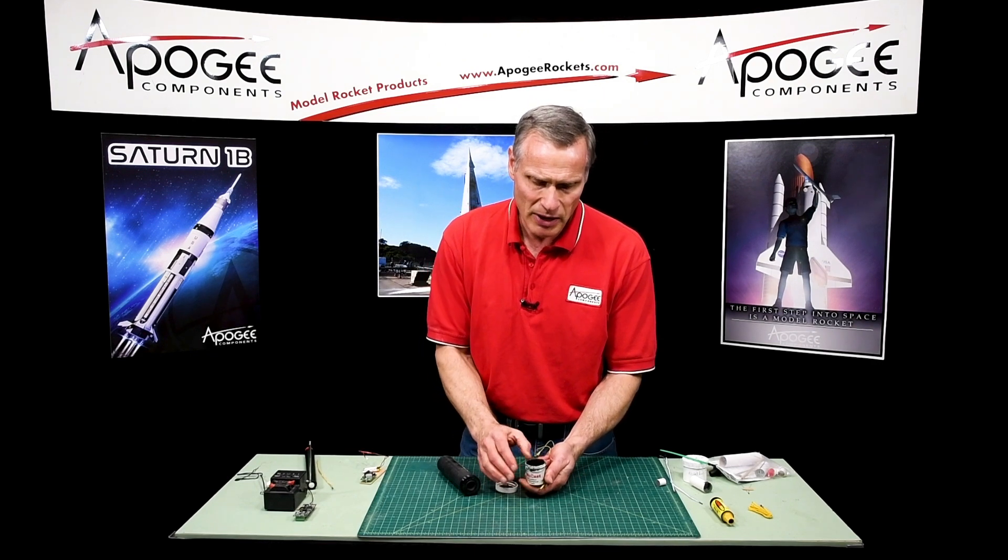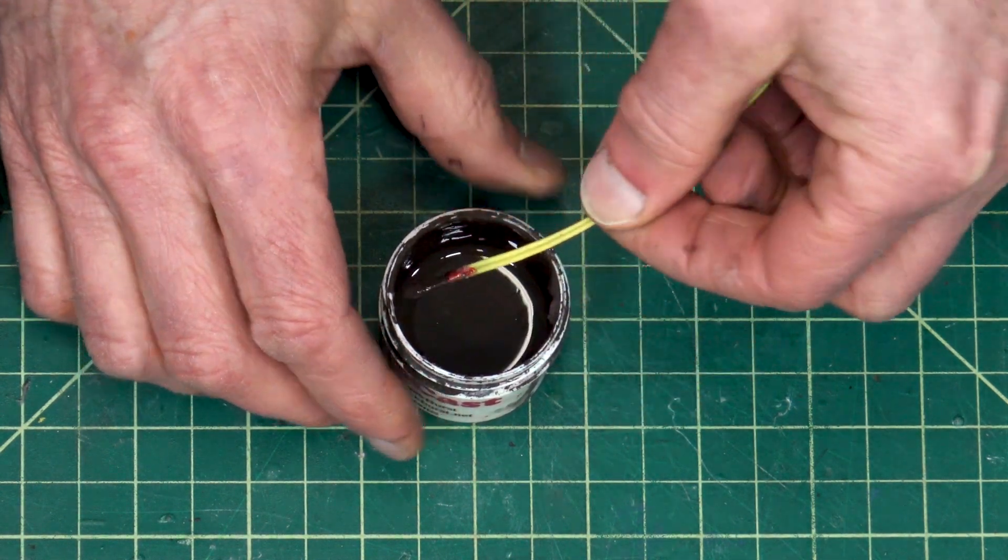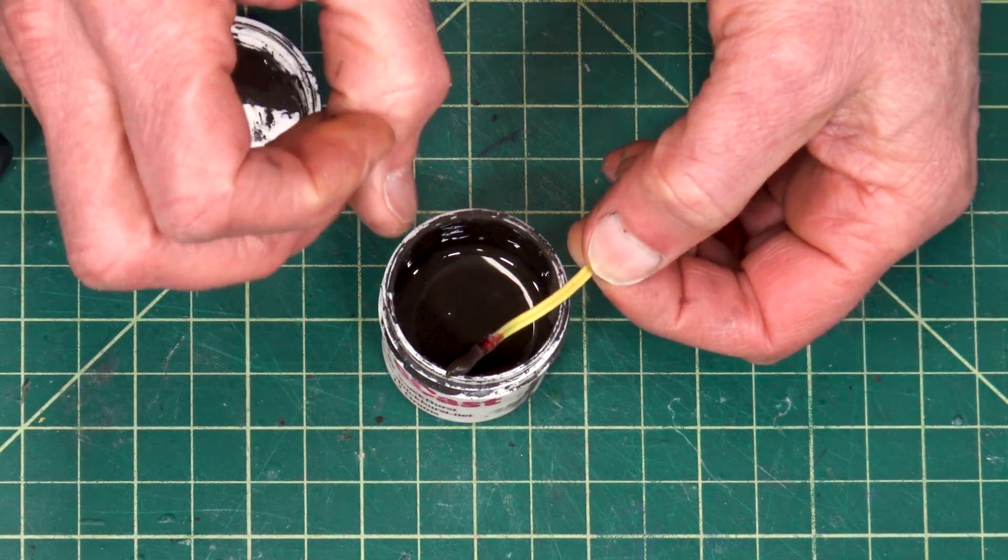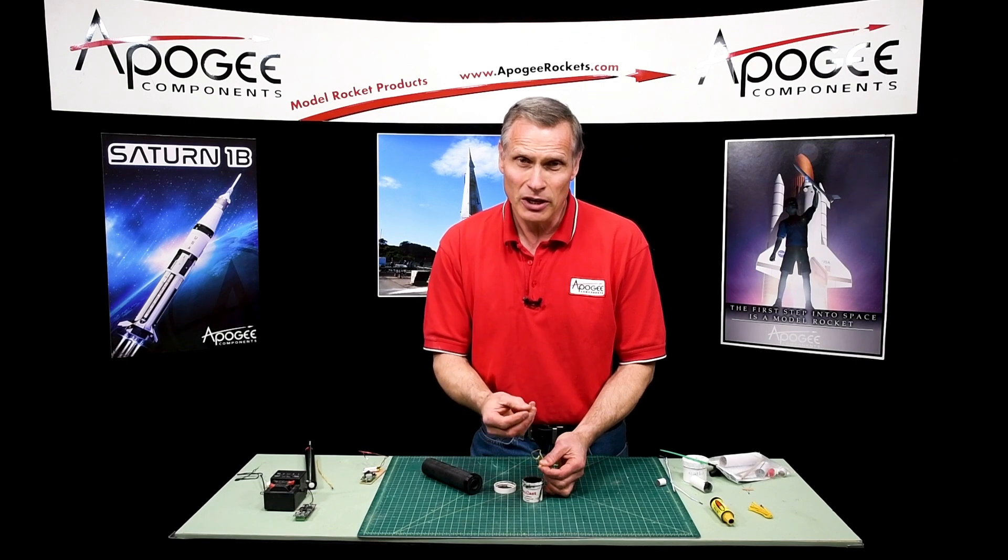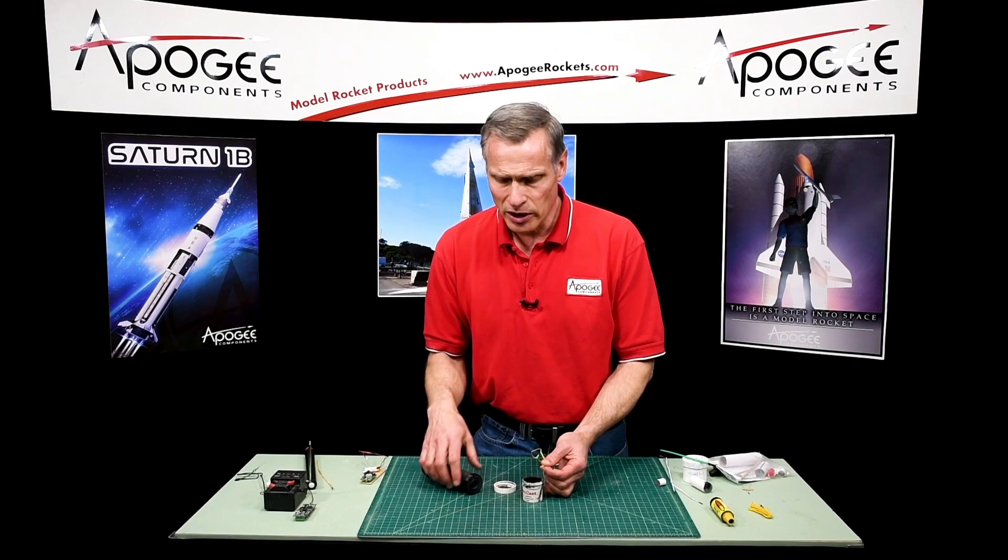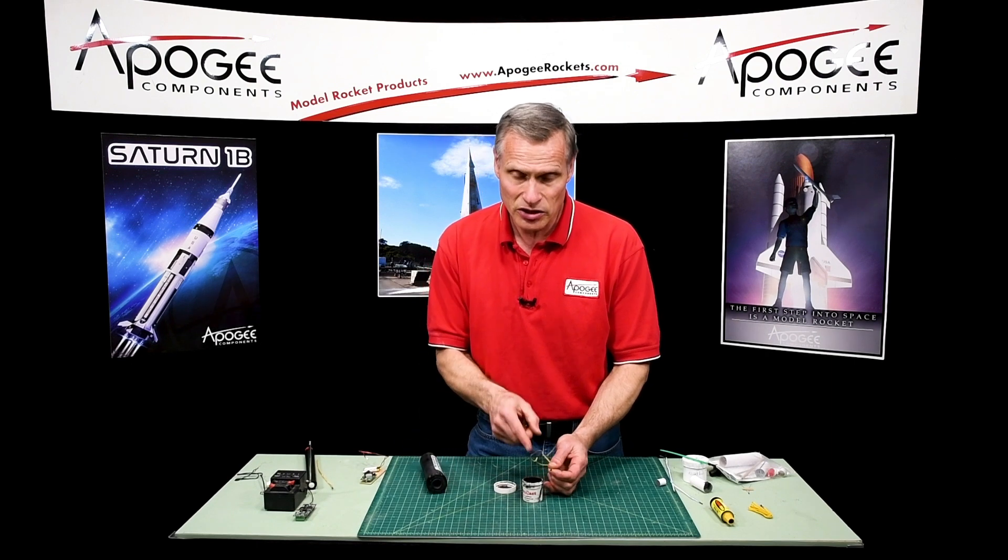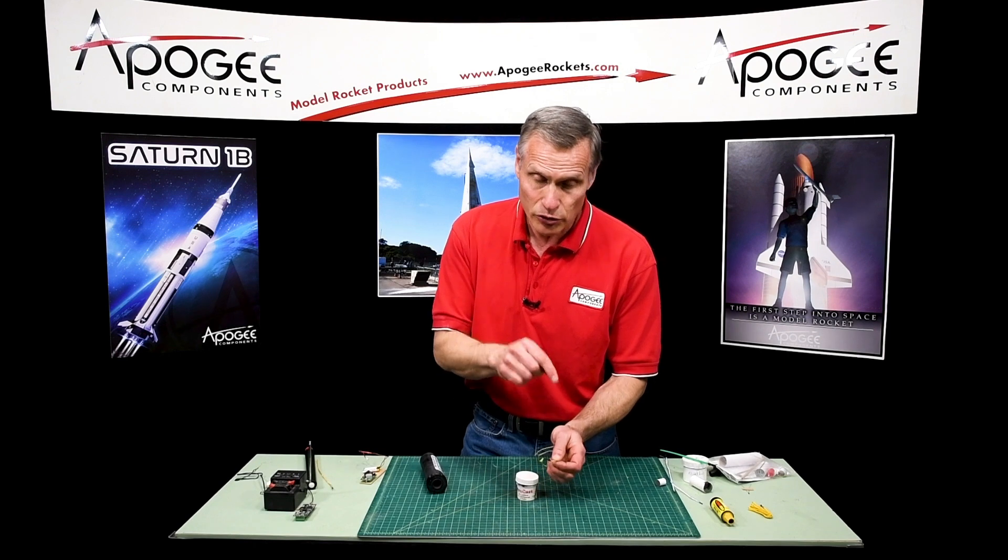But the Procast is formulated so that you can dip the e-match into the Procast and you want to put a big head on there and this when it fires off it will it sticks enough to it that it will burn and set off the motor at the same time. So that's the difference, this stuff is a little bit I would use that for dipping e-matches specifically.